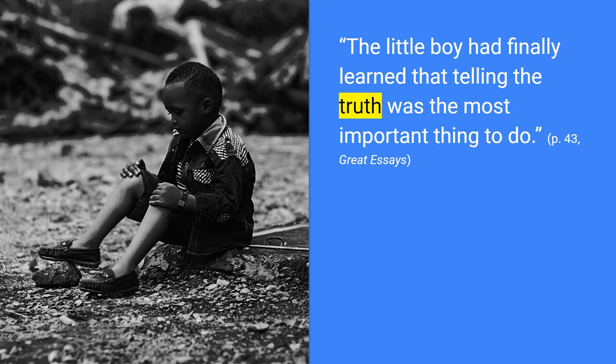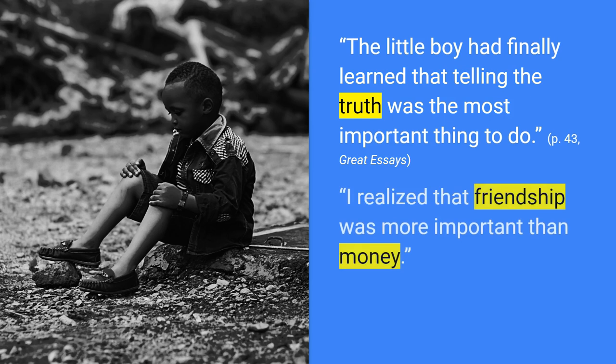Generally, the moral, revelation, or prediction are given in the final sentence. If you look in the textbook Great Essays, you'll see this sentence given as the example of the final sentence of the conclusion. Here's another example: "I realized that friendship was more important than money." The words friendship and money are highlighted because this sentence is showing an important cultural value around those two things. So again, a moral usually talks about an important cultural value or rule.